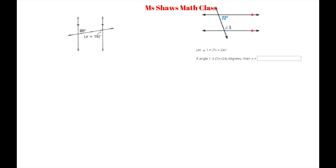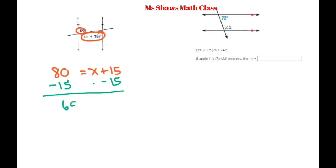Now I have some examples. In this case, if we solve for x, these are alternate interior angles, which means they're congruent, so you can set them equal to each other. We have x plus 15 equals 80. Subtract 15 from both sides and you get x equals 65. So to make these congruent, x has to be 65, because 65 plus 15 equals 80.